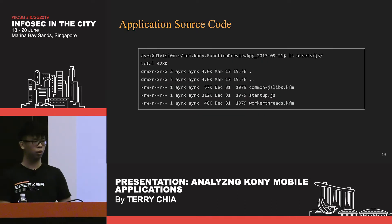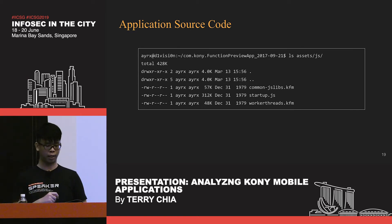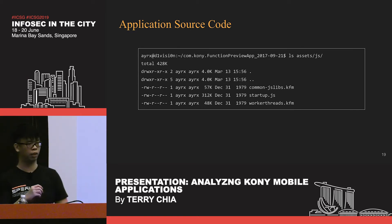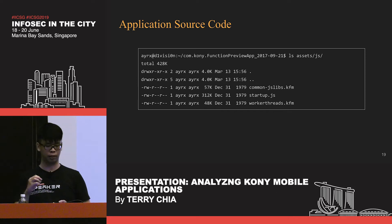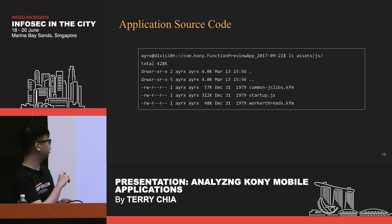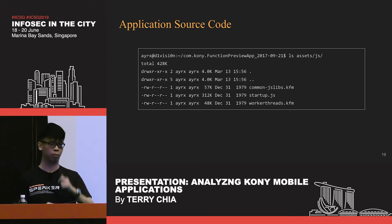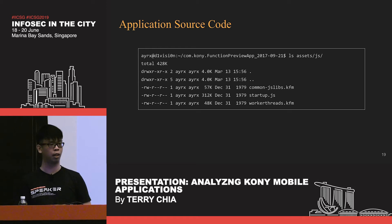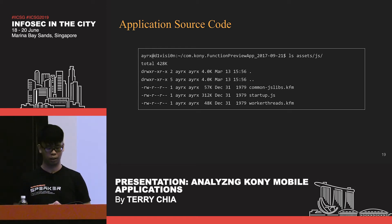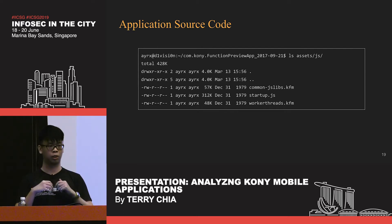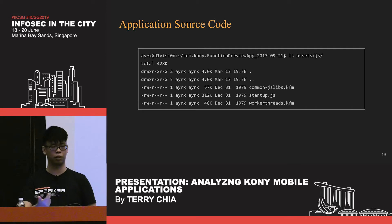The application source code is in the assets/js folder of the APK file. You might see a few different files there. Two of them — common_jslibs.kfm and worker_threads.kfm — are more or less like the Kony standard library and will be found in every application built with Kony. The startup.js file is where all the code specific to the application, such as your business logic, will live.